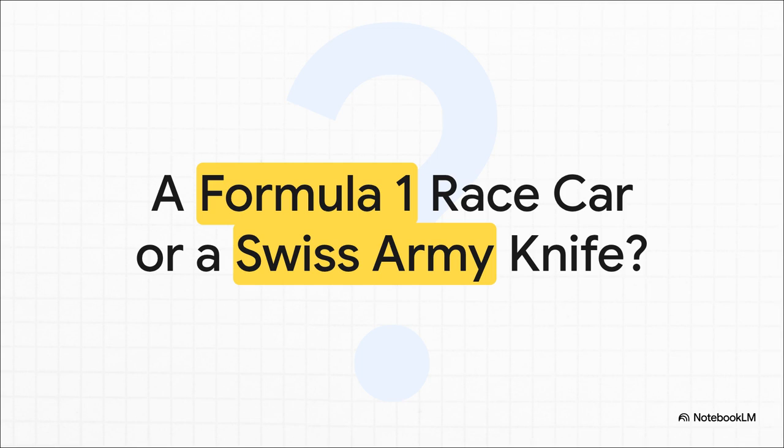So to really wrap your head around this, I want you to start with a question. Are you building a Formula One race car, or do you just need a Swiss army knife? They're both incredible tools, but you would never use one for the other's job. This single metaphor is the key to understanding literally everything about Go and AutoHotKey.